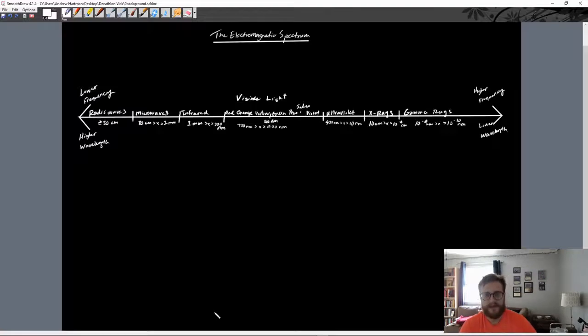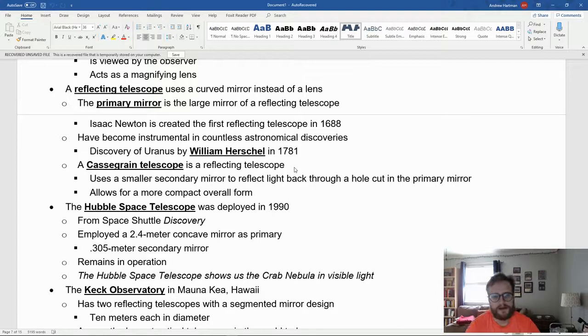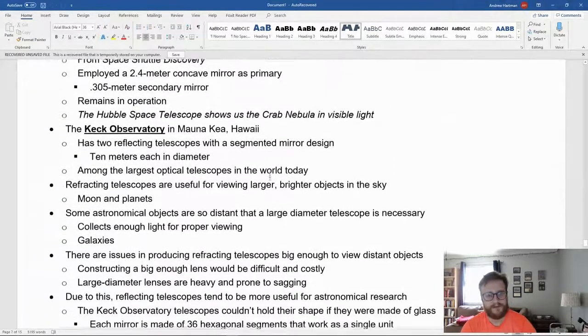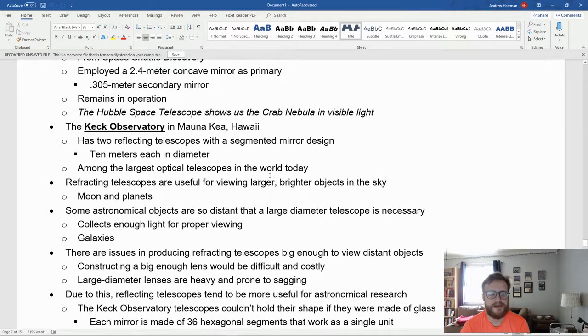At this point, we're going to start categorizing our different telescopes based on the electromagnetic spectrum. In the visible light spectrum is the Hubble Space Telescope, which was first launched in 1990. We also have the Keck Observatory in Mauna Kea, Hawaii, which has two reflecting telescopes with a segmented mirror design.